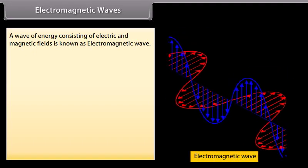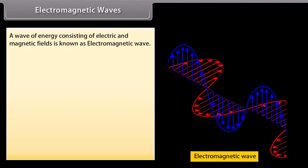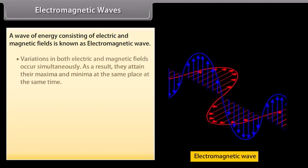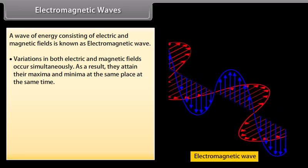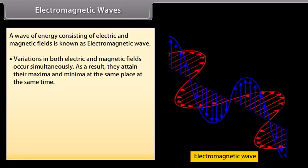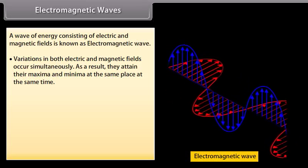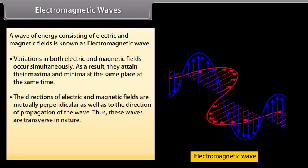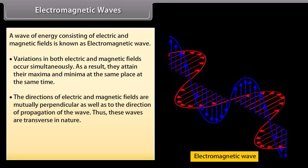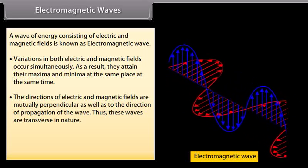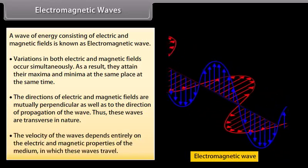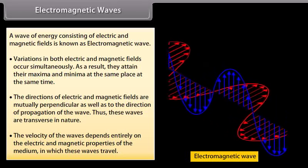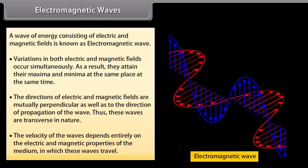Electromagnetic waves: variations in both electric and magnetic fields occur simultaneously. They attain their maxima and minima at the same place at the same time. The directions of electric and magnetic fields are mutually perpendicular as well as to the direction of propagation of the wave, making these waves transverse in nature. The velocity of the waves depends entirely on the electric and magnetic properties of the medium in which they travel.